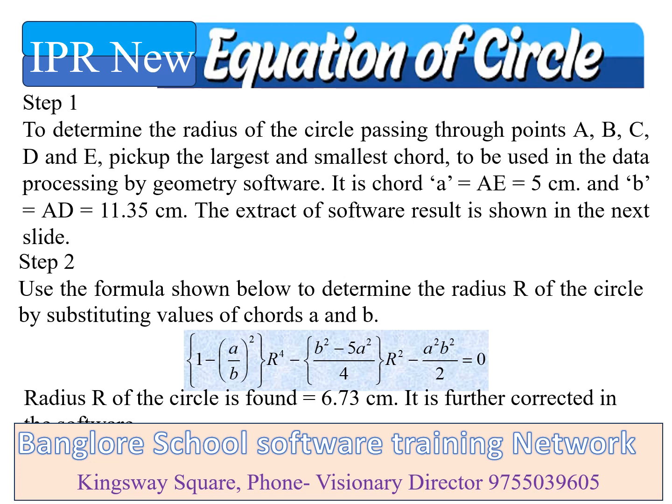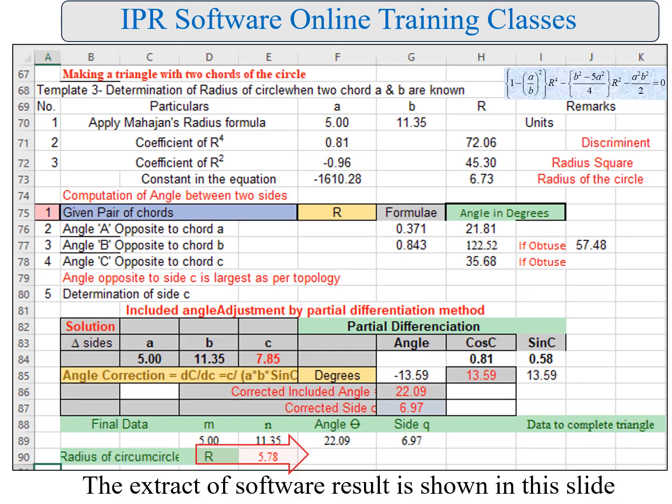Step 2: Use the formula shown below to determine the radius R of the circle by substituting values of chords A and B. The radius R of the circle is found to be 6.73 cm, which is further corrected in the software. The extract of software processing is shown in this slide. Resulting data: angle opposite to chord A = 21.81°, angle opposite to chord B = 122.52°, angle opposite to chord C = 33.68°. Computed chord C = 6.87 cm. Thus, the corrected radius of the circle = 5.78 cm.